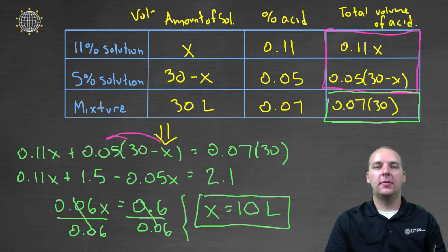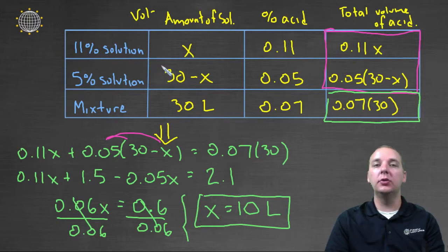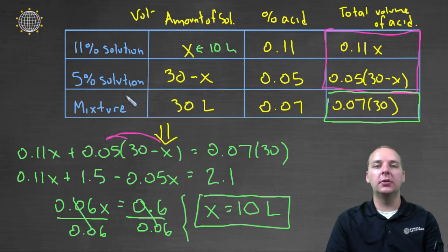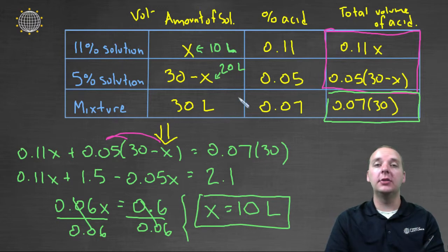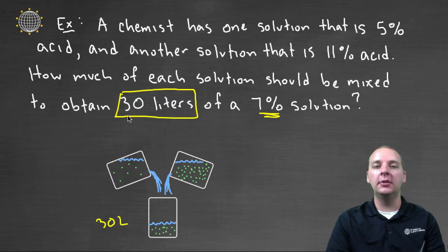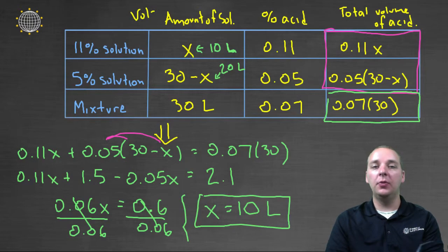X equals ten liters. X represents the volume of the eleven percent solution, so we have ten liters of the eleven percent solution. That also tells us how much of the five percent solution we need: thirty minus ten equals twenty liters. Ten and twenty make thirty — that checks out. So we have our answer.